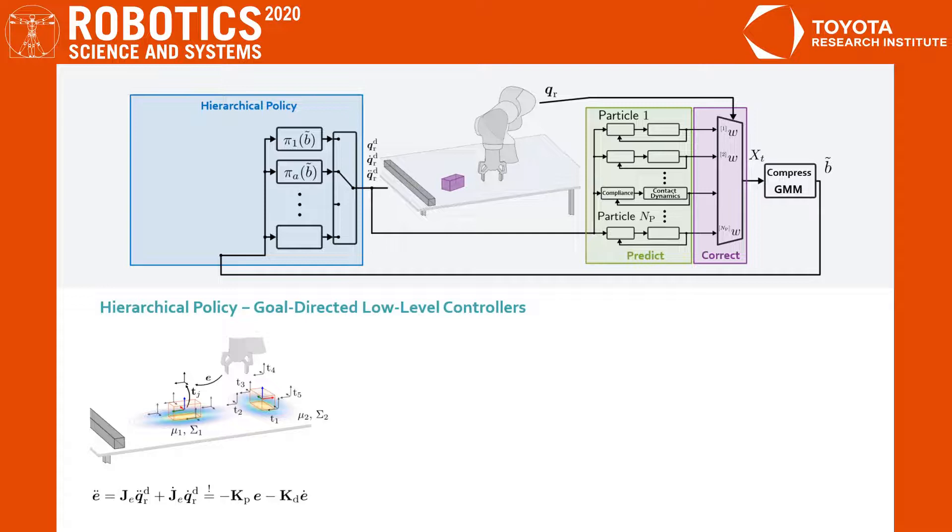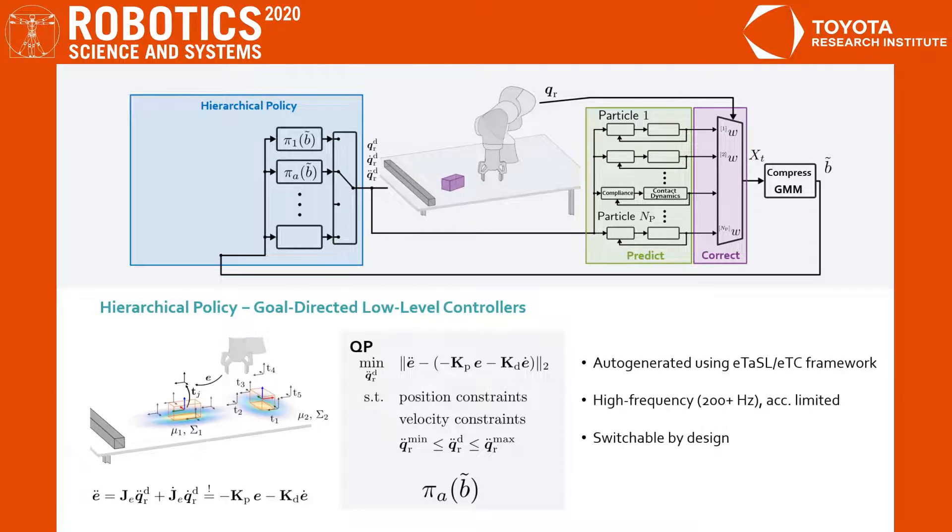We now compute the reference acceleration by solving a QP that penalizes the deviation from the desired error dynamics subject to constraints on position, velocity and acceleration. As the controllers are acceleration resolved, we can switch them without causing discontinuities in the robot's motion.